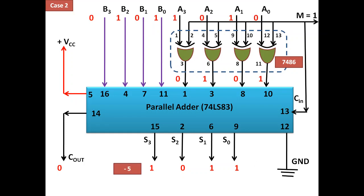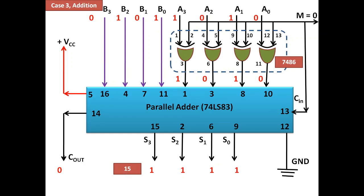Case 2: the minuend is 0101 and the subtrahend is 1010. Applying the same concept, the XOR gates produce the one's complement 0101. Since the control is connected to carry-in, 1 gets added internally, giving 0110. When 0101 and 0110 are added, we get 1011 with no carry out. Since there is no carry, the result is negative. Negative numbers are in two's complement, so this is minus 8 plus 2 plus 1, which gives minus 5.